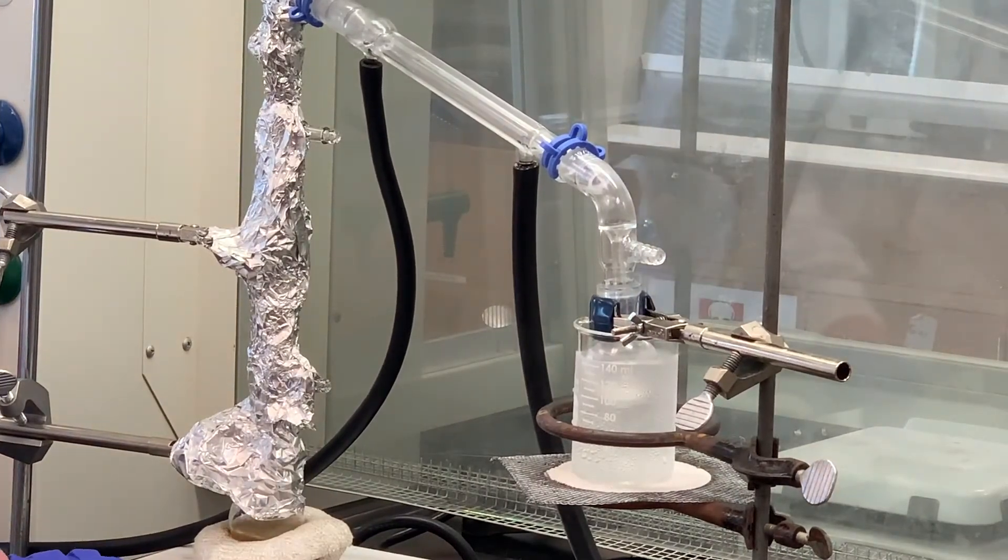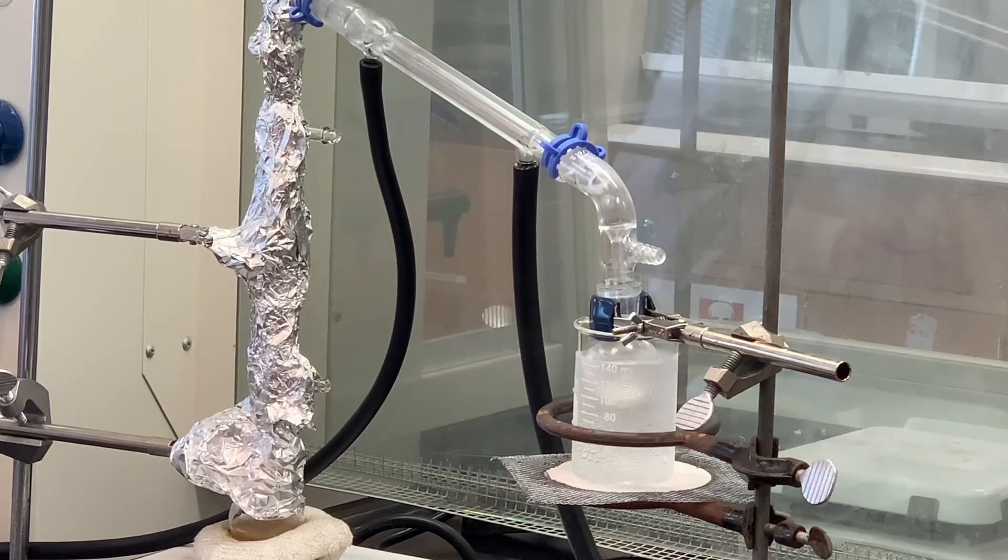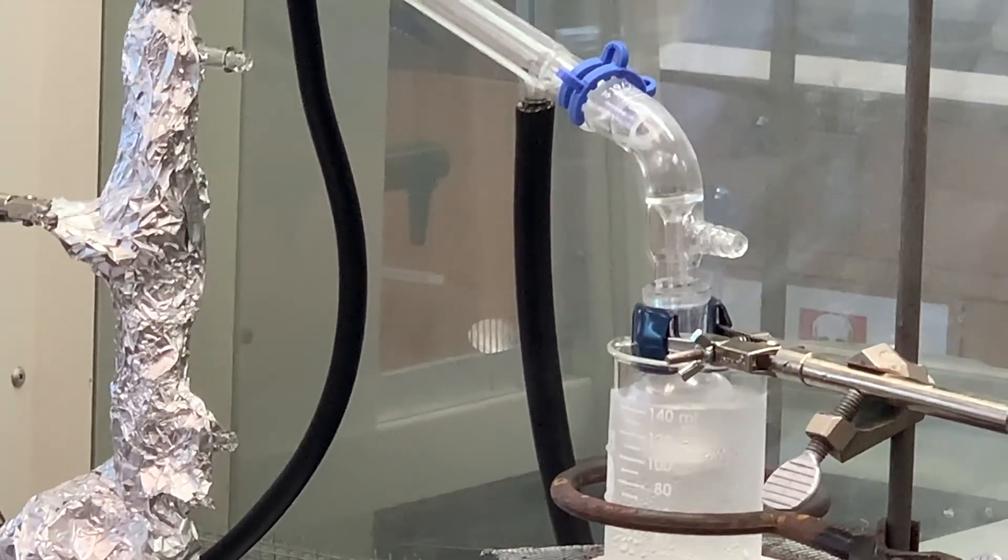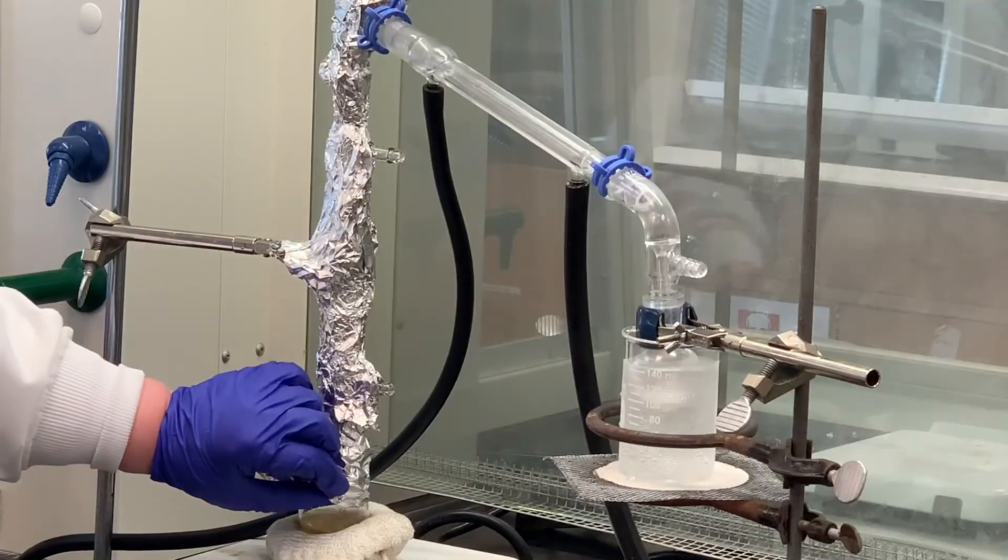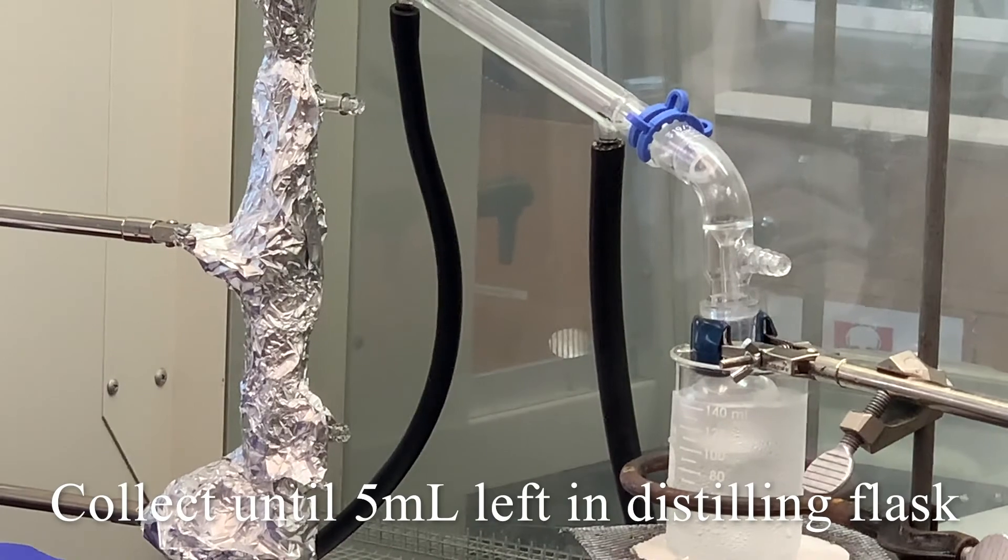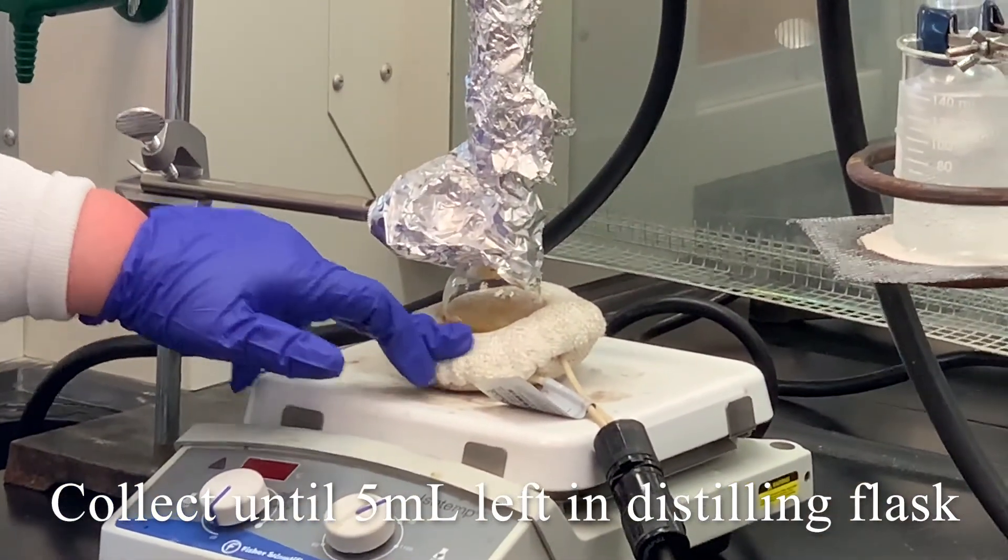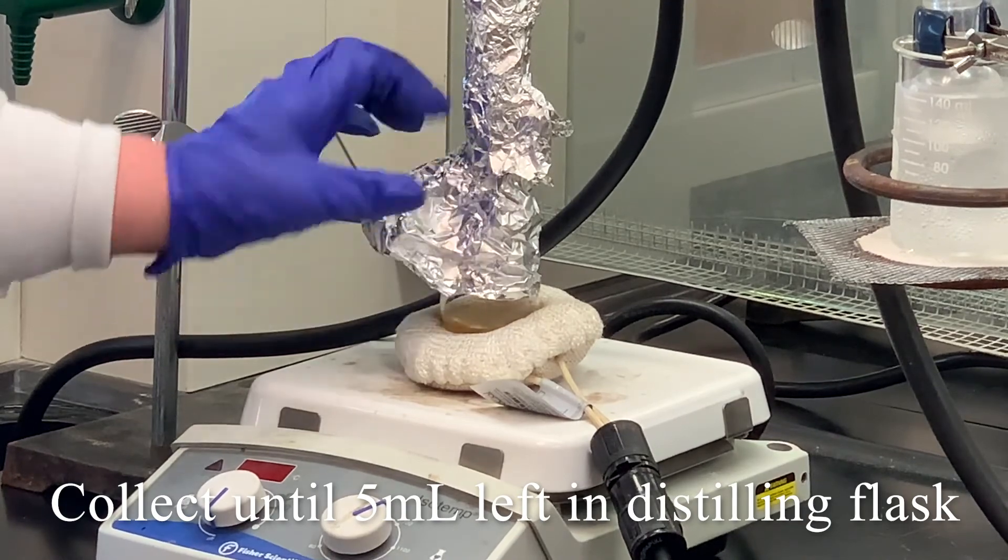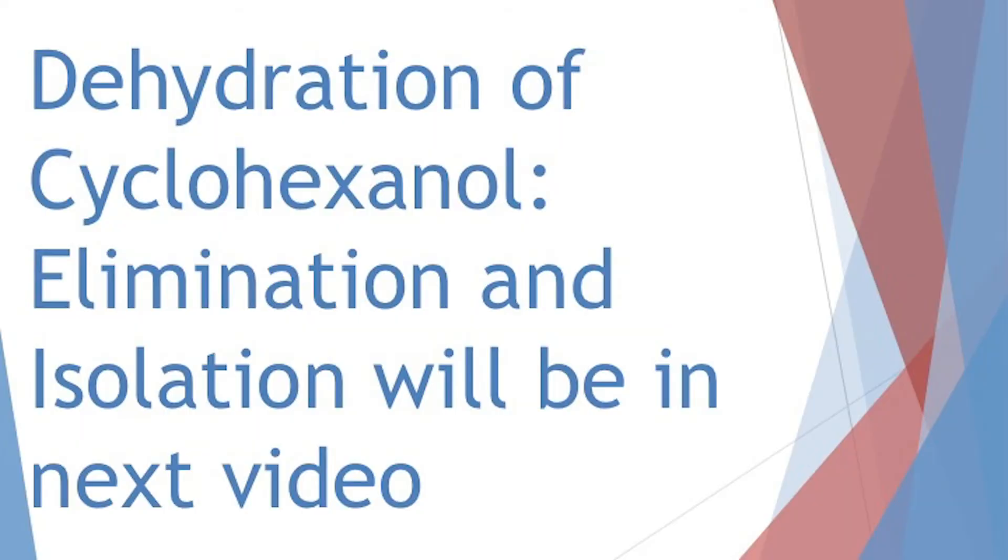Just collected our first drop around 67, 68 degrees. We've got the ice water bath here chilling that receiving flask. You know, by looking at the still pot or distillation flask, there has been a color change. Temperature now is still around 67. We're going to let this continue until about five milliliters are left inside the distilling flask. And then we'll work up our product on the right hand side in the receiving flask.